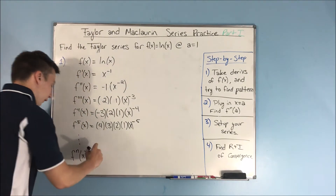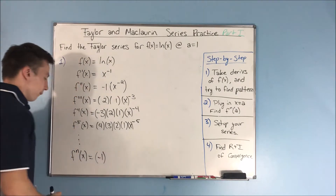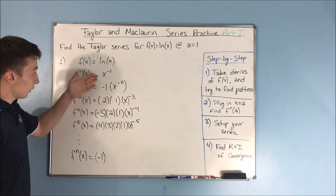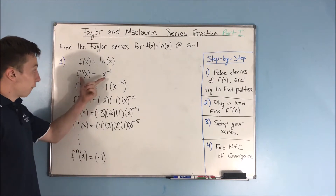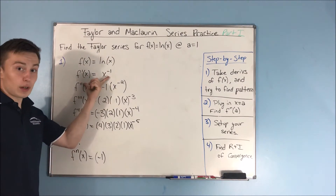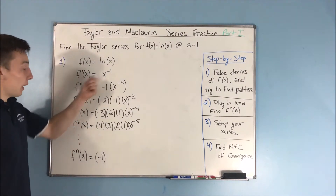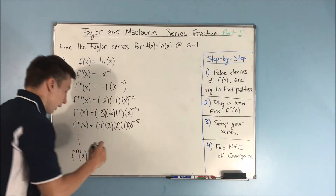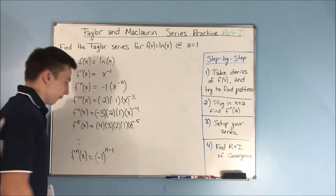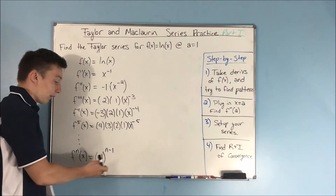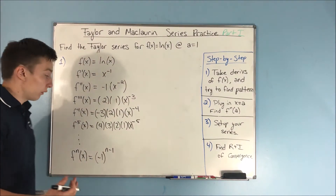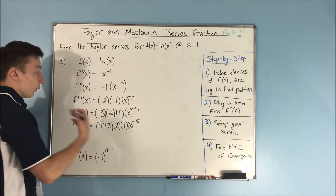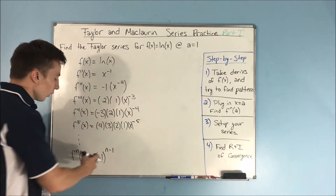Let's take care of these negatives first. We'll use negative 1 to a power because we see an alternating negative. Our first term — the n equals 1 term — is positive. So we're going to put n minus 1 in the exponent, because negative 1 to the 0 power is just 1, which is positive. Whereas if you had the n equals 2 term, that would be negative.